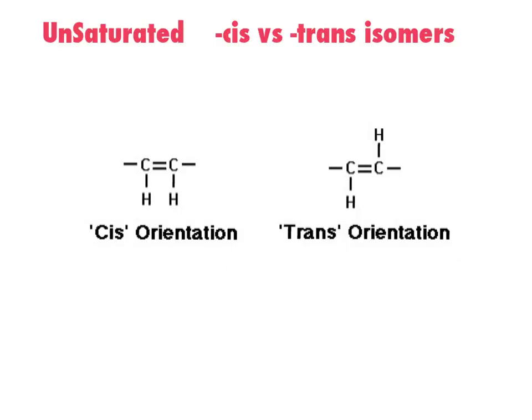Along with unsaturated fats, there are two different types: cis and trans isomers, and it deals with where the hydrogens are at the double bonds. If it's a cis fat, the hydrogens are on the same side — cis is a Latin word meaning 'same side.' Trans means across, like a trans-oceanic voyage or transcontinental — you're going across — so the hydrogens are across from each other, across from the double bond.